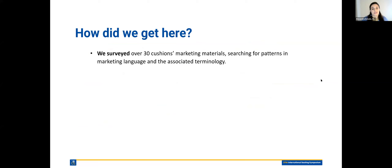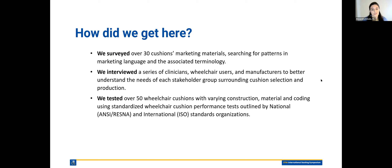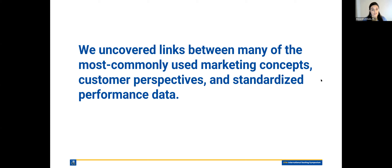We have been surveying over 30 cushions' marketing materials, looking for patterns in marketing language and associated terminology. We've been talking with clinicians, wheelchair users, and manufacturers to better understand the needs of each of those groups surrounding wheelchair cushion selection and production. We've been testing over 50 wheelchair cushions varying in construction, material, and coding using standardized wheelchair cushion performance tests outlined by national and international standards organizations. We've uncovered links between commonly used marketing concepts, customer perspectives, and standardized performance data that we've collected, and we'll discuss those links.